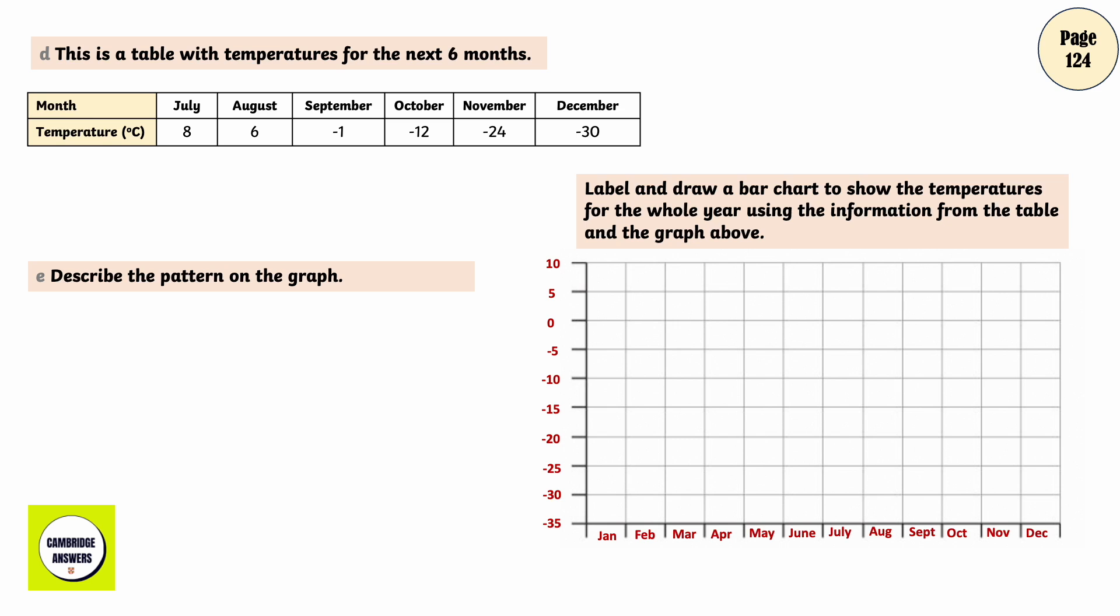Label and draw a bar chart to show the temperatures for the whole year using the information from the table and graph above. January, February, March, April, May, June, July, August, September, October, November, December.